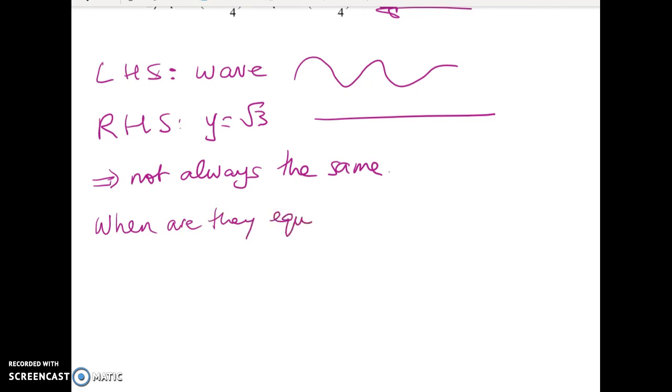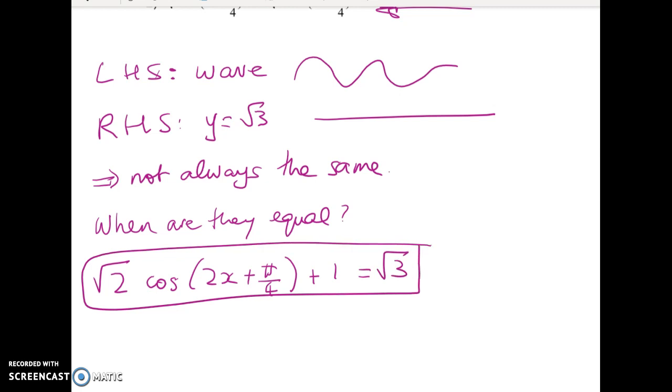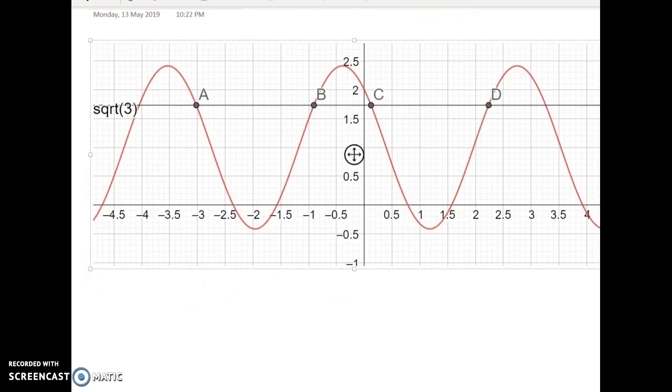So when are they equal? Well, we've got root 2 cos of 2x plus π/4 plus 1 is equal to root 3. Now you can chuck that into your calculator and get an idea for what the functions look like. And I've done that in GeoGebra here. So here we go. This is what we're trying to find.